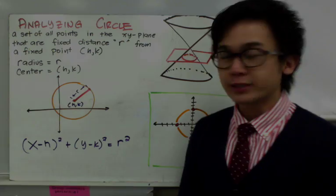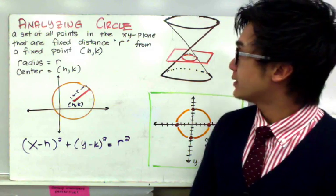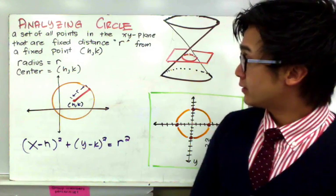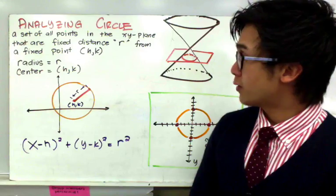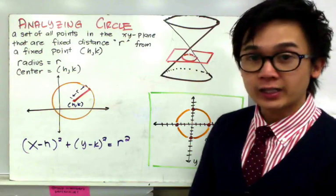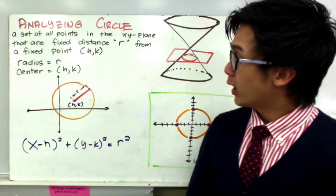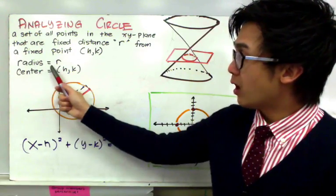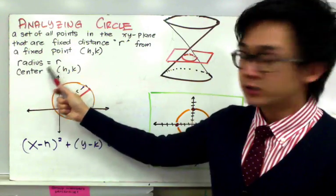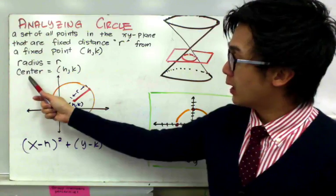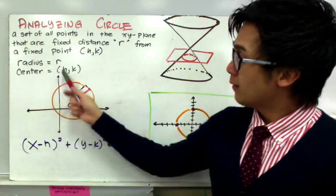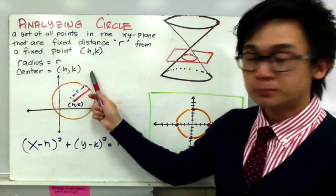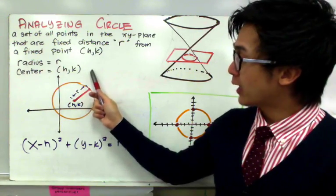A circle, by definition, is a set of all points in the xy-plane that are a fixed distance r from a fixed point (h, k), where the radius is given by r, and the center is given by the ordered pair (h, k).